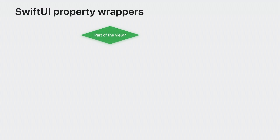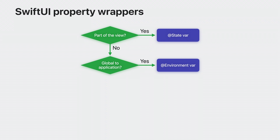To wrap up the wrappers, there are only three questions you need to answer for using Observable models in SwiftUI. Does this model need to be state of the view itself? If so, use @State. Does this model need to be part of the global environment of the application? If so, use @Environment.